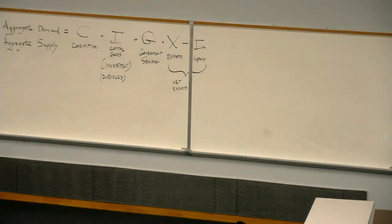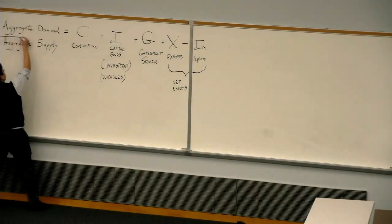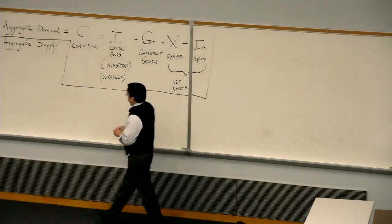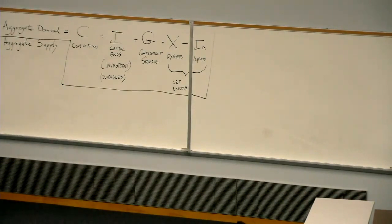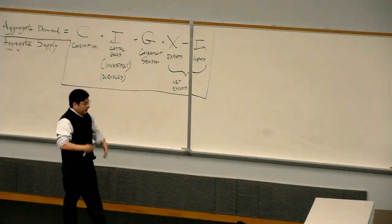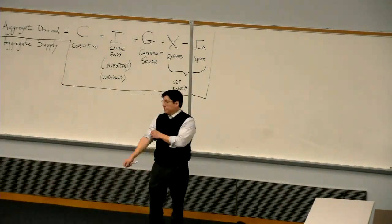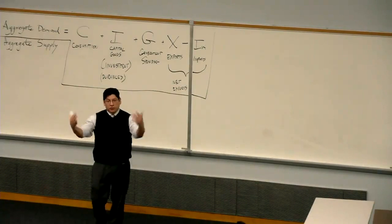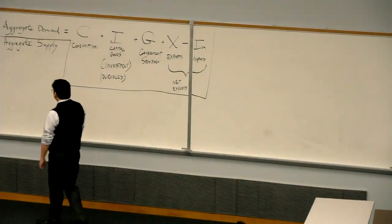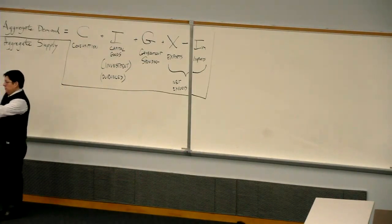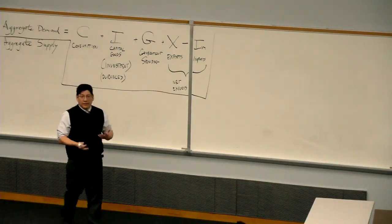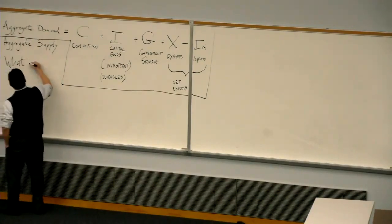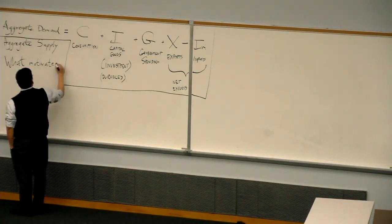That's aggregate demand. Let's switch to speaking in broad terms about aggregate supply. Aggregate demand was about what might motivate you to buy different kinds of goods and services. When we're thinking about aggregate supply, the problem is different: why is it that anyone would produce anything? We're talking about GDP — the total amount of final goods and services produced — in a market economy, and we ask: what motivates suppliers?